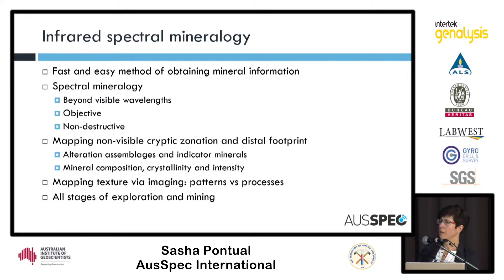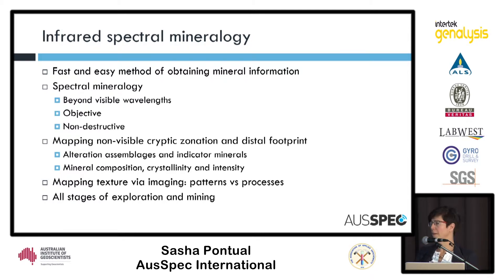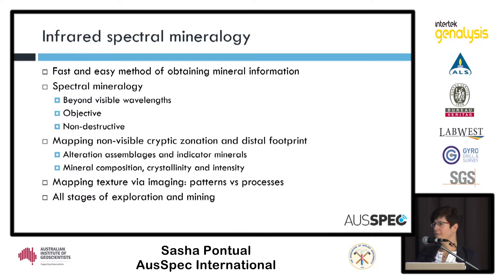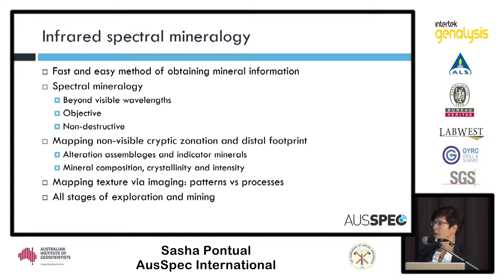Infrared spectral mineralogy — for those of you who have come across it over the years, we promote it as a way of getting fast and easy mineral information from spectra. With spectral mineralogy we can get not only alteration mineral information, but we're looking at information that is beyond the visible. You'll be able to see a lot of things you can log in your samples, but the spectral data looks into the infrared part of the spectrum where you're getting additional information you just can't see by eye. It's an objective method — like X-ray diffraction, it gives you mineral information not dependent on the expertise of the geologist. Best of all, it's non-destructive, so you can make a measurement directly on the sample surface without any sample preparation.